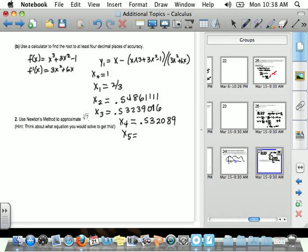That one looks good. That looks like four decimal places. So 0.532089. So x is approximately 0.5321, four decimal places of accuracy. Make sense how we do this? It's not too hard.